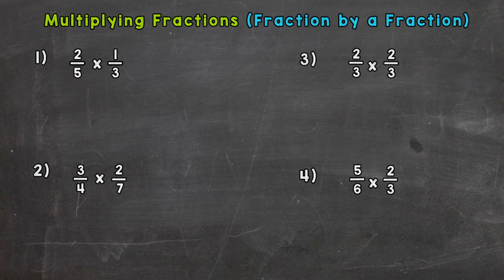Let's hop right in to number one. We have two-fifths times one-third. I'm going to rewrite the problem below. Whenever we multiply fractions, the only rule really is we multiply straight across.